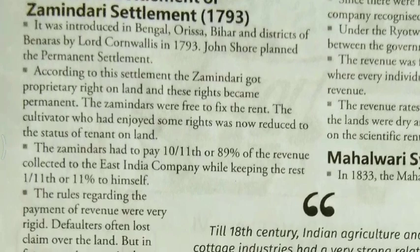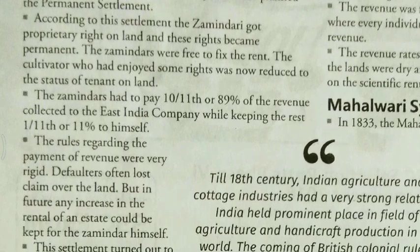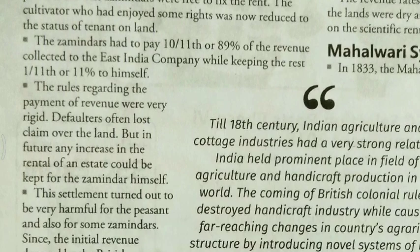The Zamindars were free to fix the rent. The cultivator, who had enjoyed some rights, was now reduced to the status of a tenant on land. The Zamindars had to pay 89% of the revenue collected to the East India Company while keeping the rest, 11%, for himself. The rules regarding payment of revenue were very rigid — defaulters openly lost claim over the land. But any future increase in rental of an estate could be kept by the Zamindars himself.